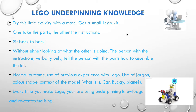The normal outcome shows that use of previous experience with Lego becomes important — the use of jargon, color, shape, the context of the model being made: a car, a buggy, a plane. All of these things are prior knowledge and prior understanding of Lego itself, and prior understanding of a car, buggy, or plane. Every time you make a Lego model, you're using underpinning knowledge and recontextualizing. Whether it's a plastic airplane, a boat, or a Lego kit, you are constantly using underpinning knowledge and your understanding of how a particular item works — and it's an important skill to have.